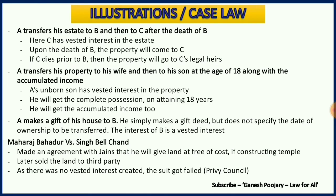In the second illustration, there are three characters: husband, wife, and son. The husband transfers the property to his wife and then to his son at the age of 18, along with the accumulated income. If the son is three years old, the wife will enjoy the property for another 15 years. Once the son attains the age of 18, she has to transfer the property to the son along with all the accumulated income of those 15 years. Till then, the son will have vested interest over the property.